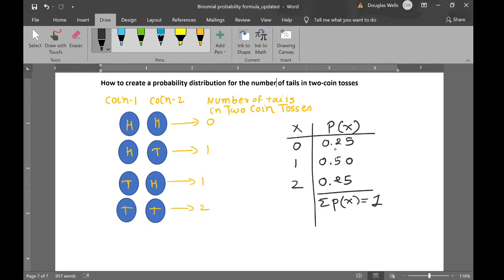Third one, the probability of each random variable has to be between 0 and 1. 0.25, 0.50, 0.25. Yes, all of them are between 0 and 1.